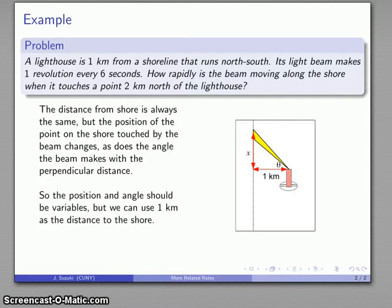What that means is I can take the position and the angle, the position along the shoreline and the angle I'm making with this perpendicular distance, these should be variables, how about x and theta, but the distance to the shore is a constant one kilometer.